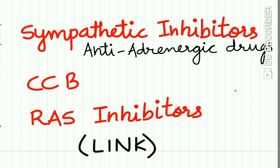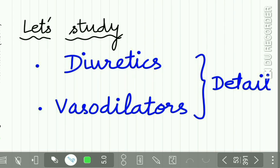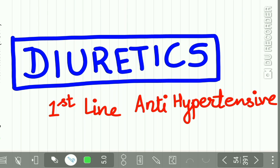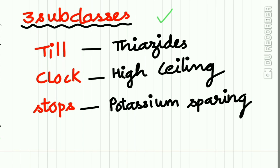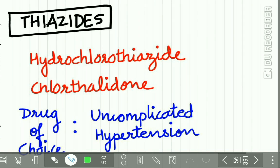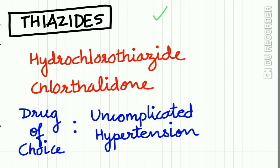Now let's study diuretics and vasodilators in detail. Diuretics are the first-line anti-hypertensive drugs. The three classes — thiazides, high ceiling diuretics, and potassium-sparing diuretics — are recalled by 'Till Clock Stops.' The thiazide group includes hydrochlorothiazide and chlorthalidone, which is the drug of choice for uncomplicated hypertension.